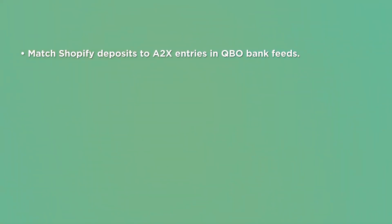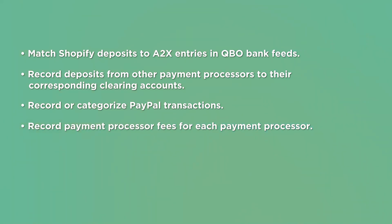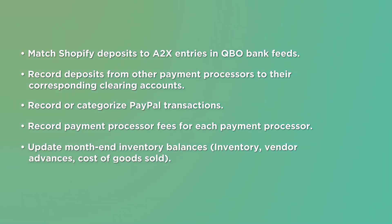Match Shopify deposits to A2X entries in the QBO bank feeds. Record deposits from other payment processors to their corresponding clearing accounts. Record and categorize PayPal transactions if you're using PayPal. Record payment processor fees for each payment processor. Update month-end inventory balances such as inventory, vendor advances, and cost of goods sold.